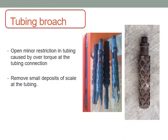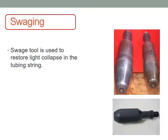Second one: tubing swaging. It is one type of gauging used to remove small deposits of scale at the tubing. Swaging is also used to restore a light collapse in the tubing strength.